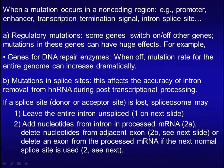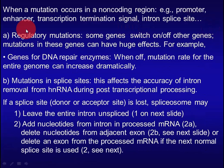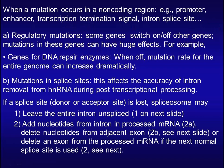When a mutation occurs in a non-coding region such as a promoter, enhancer, transcription termination signal, or intron splice site, this type of mutation can be classified into two groups. One is regulatory mutation — some genes can switch on or off other genes, and mutations in these genes can have significant effects. For example, genes for DNA repair enzymes, when switched off, can cause the mutation rate for the entire genome to increase dramatically.